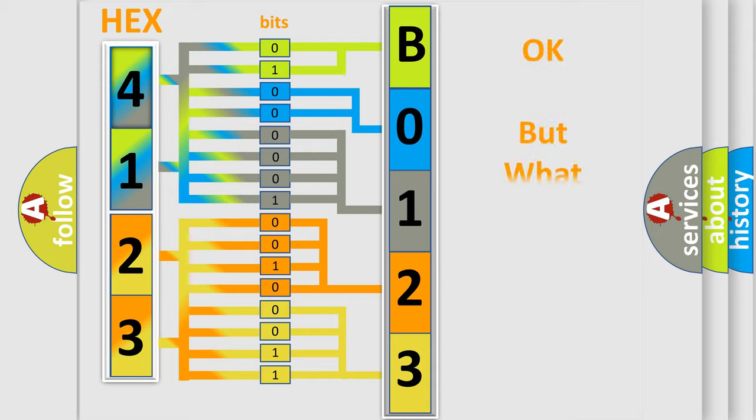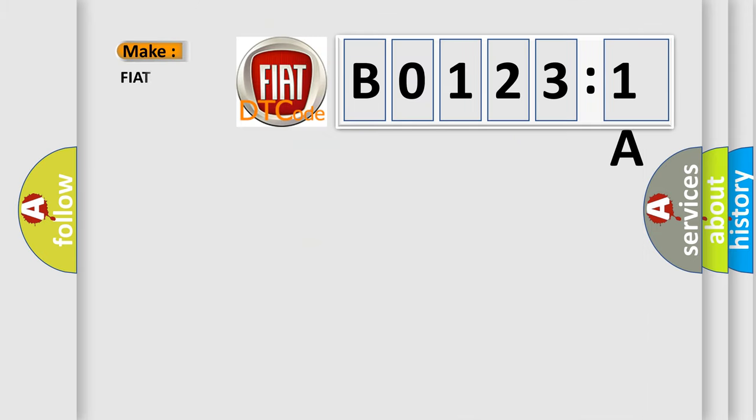The number itself does not make sense to us if we cannot assign information about what it actually expresses. So, what does the Diagnostic Trouble Code B0123:1A interpret specifically for FIAT car manufacturers?